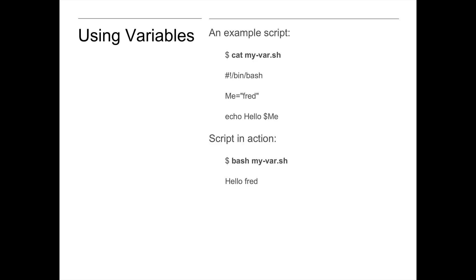Next we'll look at how you use variables in a script. In myvar.sh we set a variable equal to fred, and then use the echo command with dollar-sign syntax to print out the variable. When the script executes it prints the contents of the variable rather than the literal string 'dollar me'.